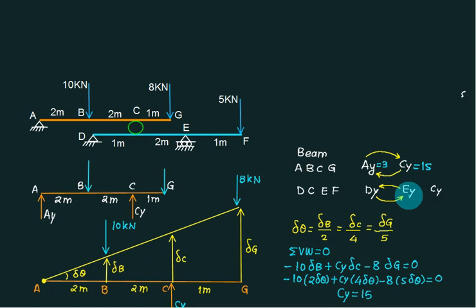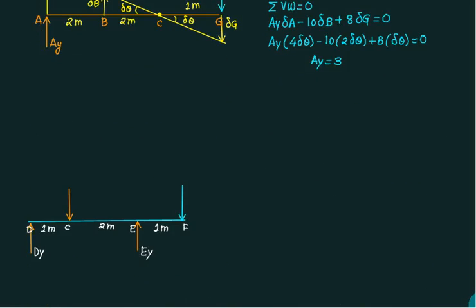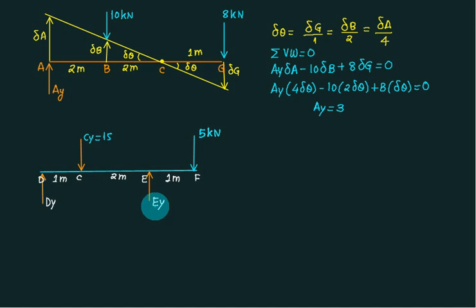Now we will only discuss for the second part. The second part is this one. This one is second part. Now we want to find out DY and EY. If you see, this figure is very clear. You want to find out DY, rotate about E. To find out EY, rotate about D.